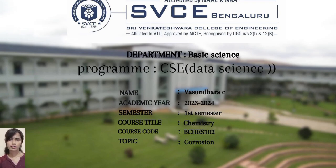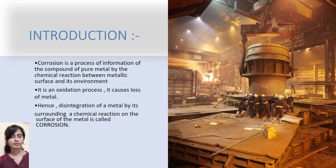Today my presentation is about corrosion. I am going to discuss what is corrosion, what are the types of corrosion, and what are the factors affecting corrosion. Corrosion is a process of formation of the compound of the pure metal by the chemical reaction between the metallic surface and its environment. It is an oxidization process that causes loss of metal and disintegration of metal by surrounding chemical reaction on the surface of the metal.